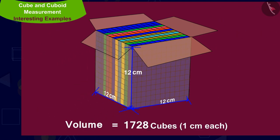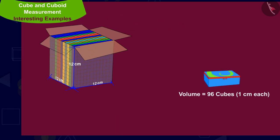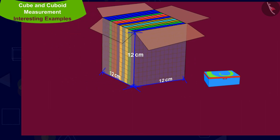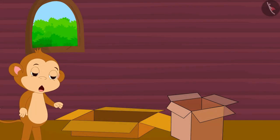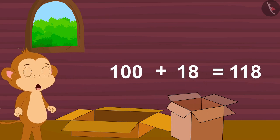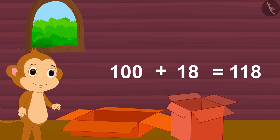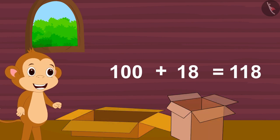In other words, the volume of this cube shaped box is equal to 1728 cubic centimeters. The volume of a compass box is 96 cubic centimeters, so 1728 divided by 96 equals 18. That means 18 compass boxes can be placed in this cube shaped box. In total, Babban can take 100 plus 18, which is 118 compass boxes to sell in his shop by filling both boxes.